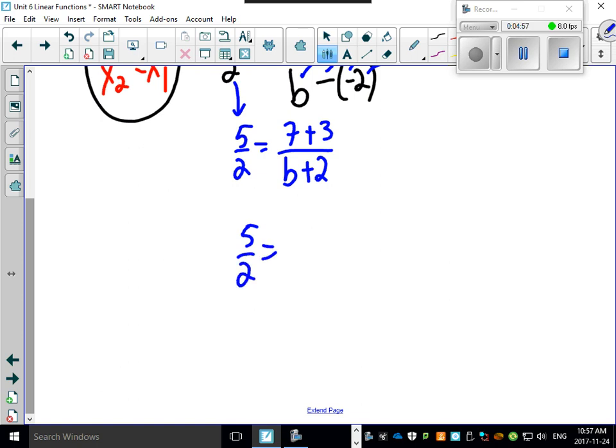Let's simplify this a little bit more: 5 over 2 equals 7 plus 3, which is 10, over b plus 2. Now you're probably sitting here going, what do I do next? Simple - what you did in grade 5: cross multiply. 2 times 10 is 20, and 5 times b plus 2.